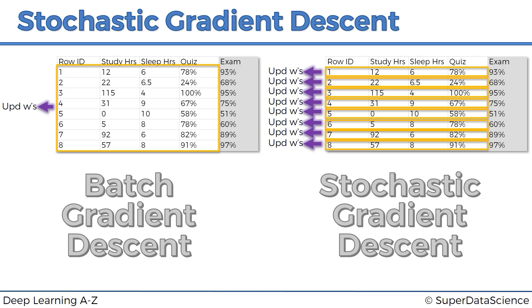There's also a method in between the two called the mini-batch gradient descent method, where you combine the two approaches. Rather than running a whole batch or running one row at a time, you run batches of rows — maybe 5, 10, or 100, however many rows you decide to set. You run that number of rows at a time, then update your weights, and so on. That's called the mini-batch gradient descent method.